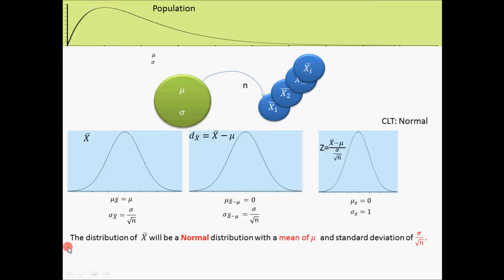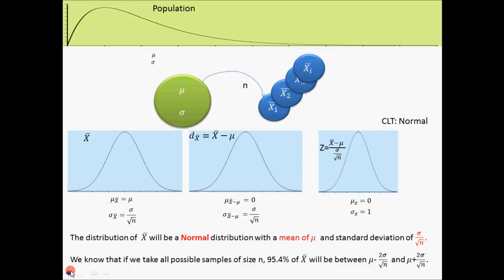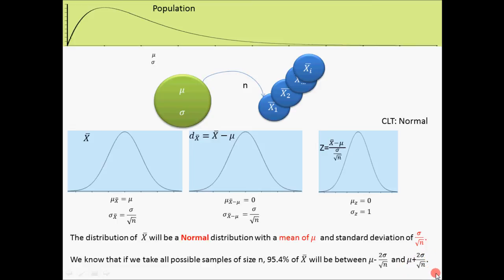This will enable us to predict things about the behavior of x bar, because we know how the normal distribution is distributed. For example, we know that if we take all possible samples of size n from the population, 95.4 percent of x bars will be within two standard deviations of the mean. The normal distribution we are now dealing with is the distribution of x bar, so the standard deviation of x bar is sigma divided by square root of n. Therefore, 95.4 percent of x bars will be between mu minus two sigma divided by square root of n and mu plus two sigma divided by square root of n.